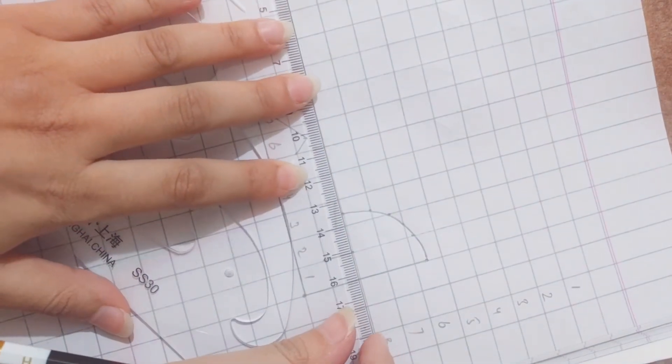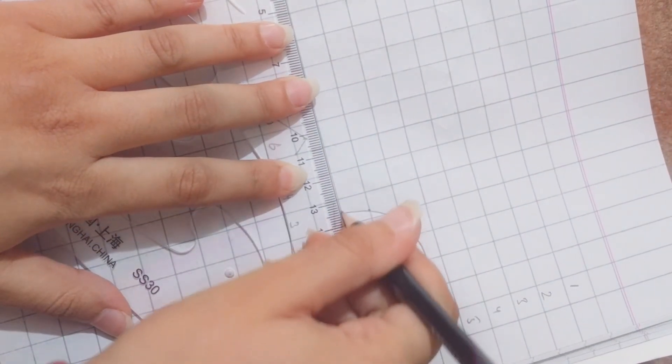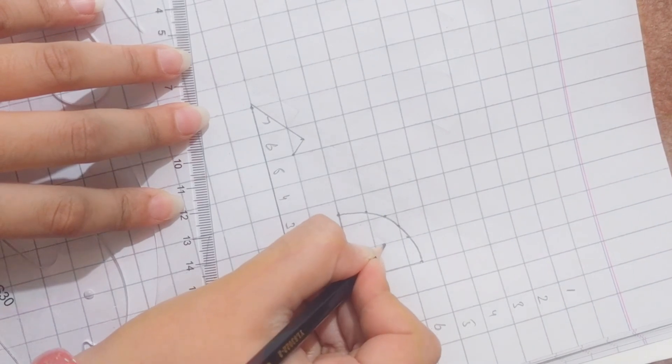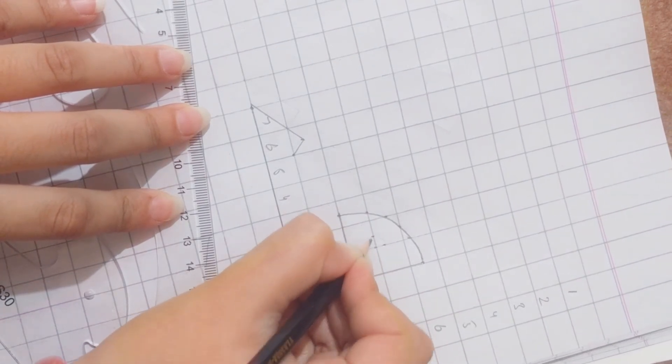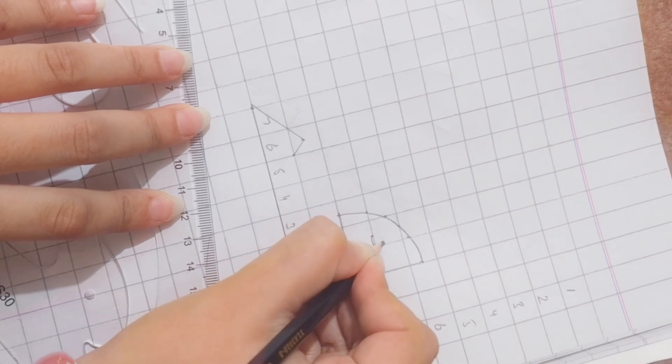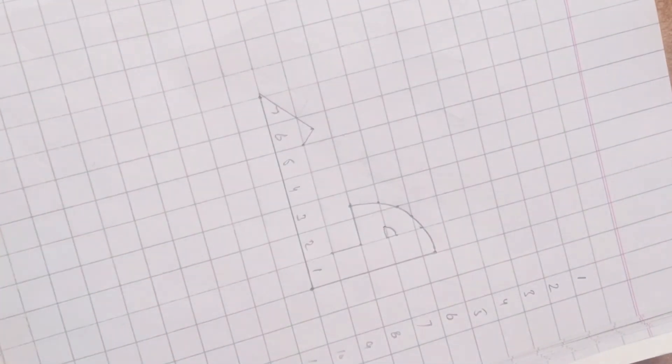And here also add a straight line and mark the side. Here also add a round shape.